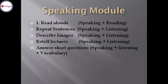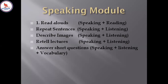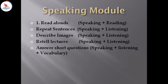In speaking, there are five types of tasks. The very first is read aloud — dealing with speaking as well as reading. Then repeat sentences, describe images, retell a lecture, and answer short questions. From these tasks we get score not only for speaking but also for listening and reading. I have to work on something because I don't want to get only 19 in speaking; I want 65 or 79 each.